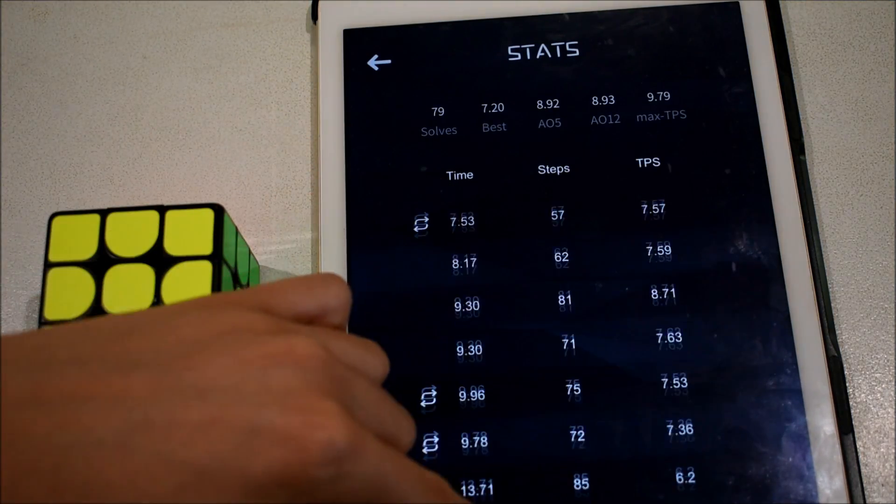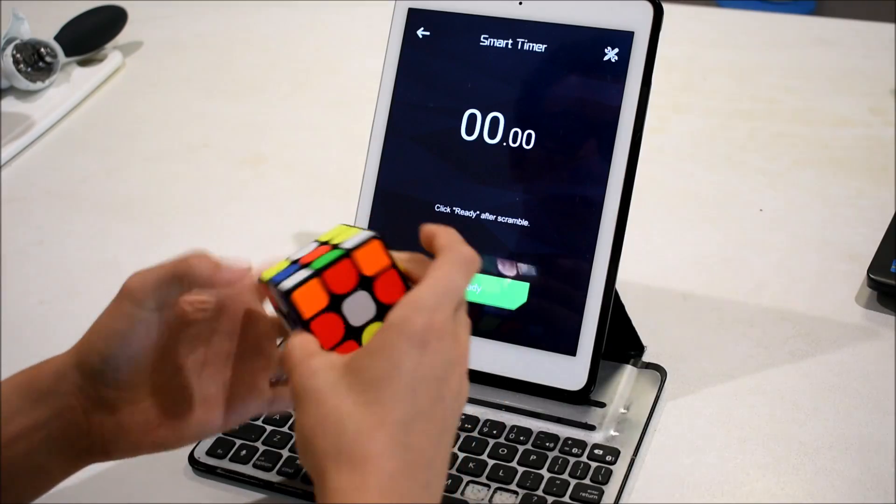Going into stats, you will find your list of times just like a normal timer. As far as I know, the Geico Cube has brought revolutionary technology into cubing.